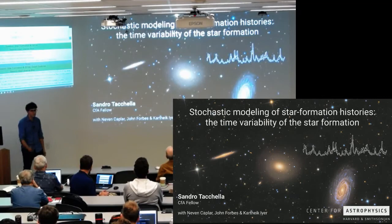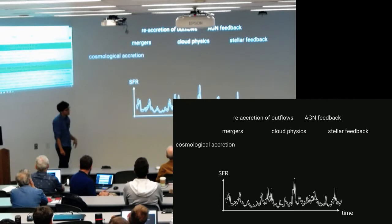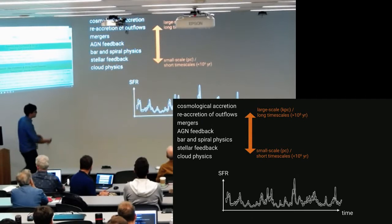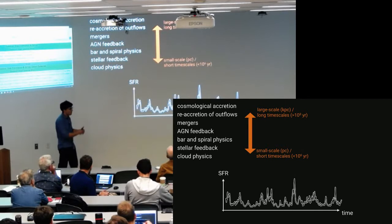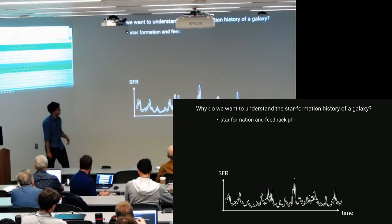We have heard throughout the week that star formation histories are shaped by a wide range of different physical processes, including re-accretion of outflows, AGN feedback, mergers, cosmological accretion, even cloud physics, and so on. These processes have influence on star formation histories on different timescales — some vary on small timescales, some on larger timescales — and there's also spatial correlation acting on small versus long timescales. If you have a good handle on the star formation history, you can learn something about star formation and feedback processes taking place in galaxies.